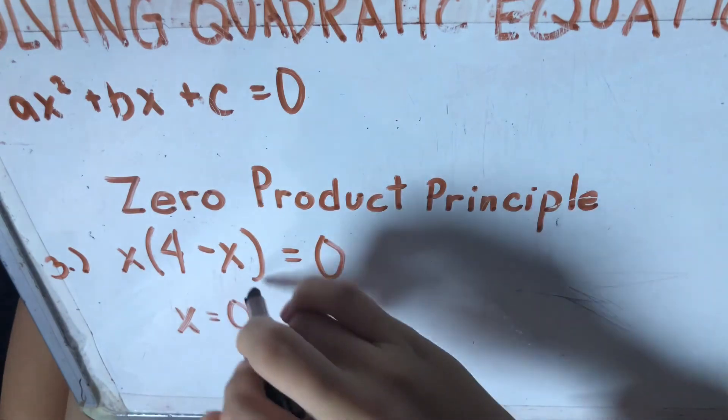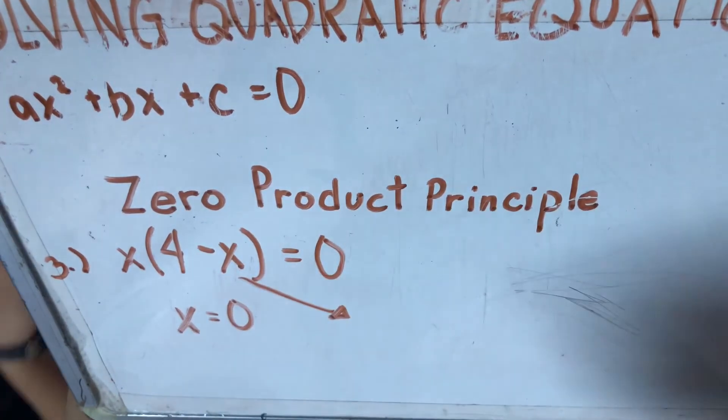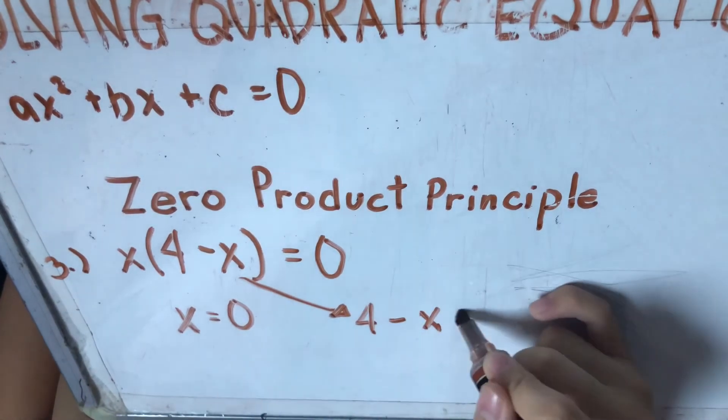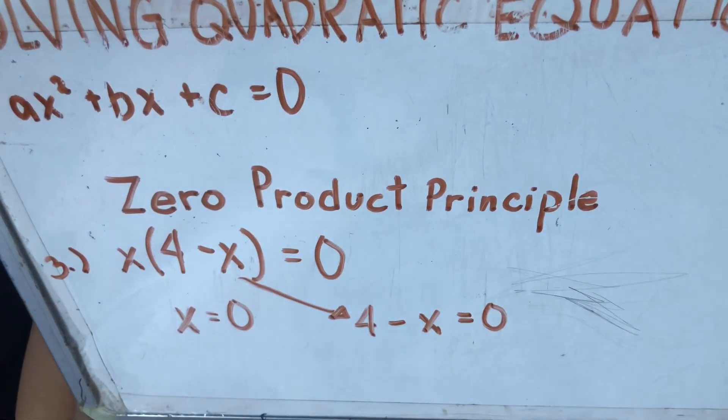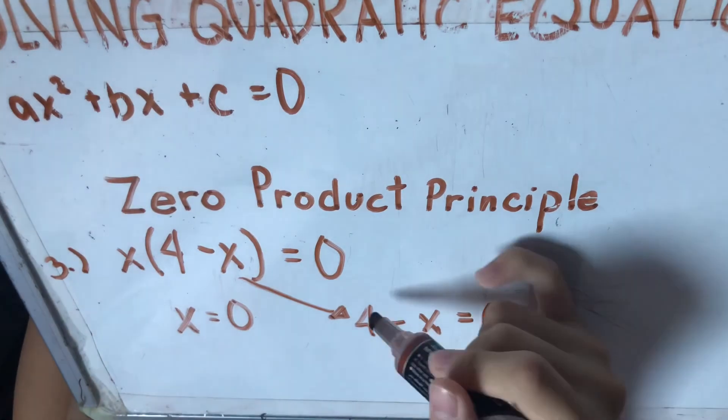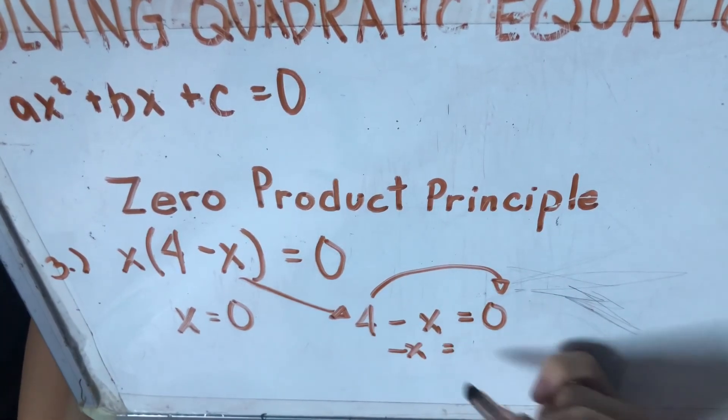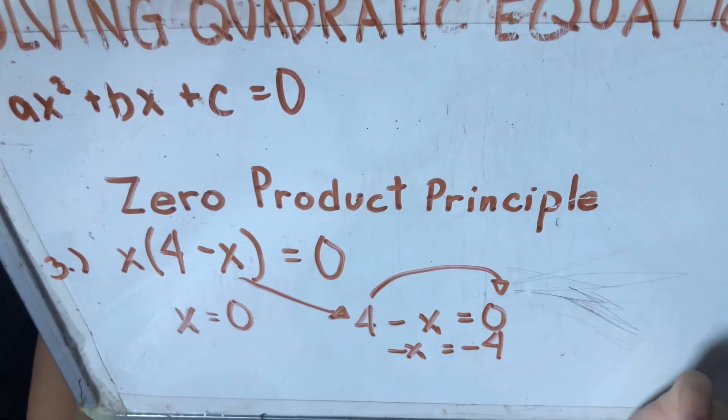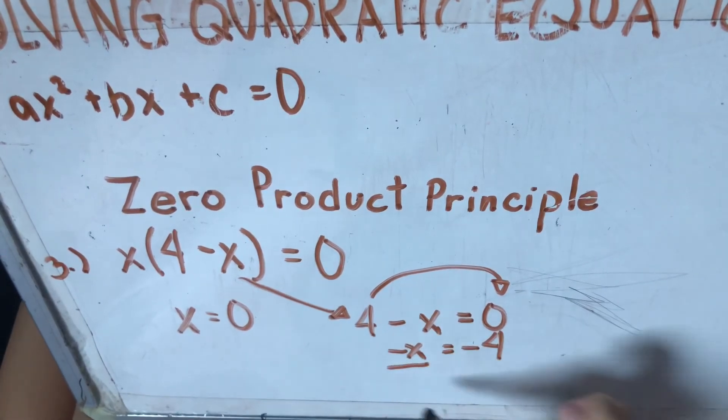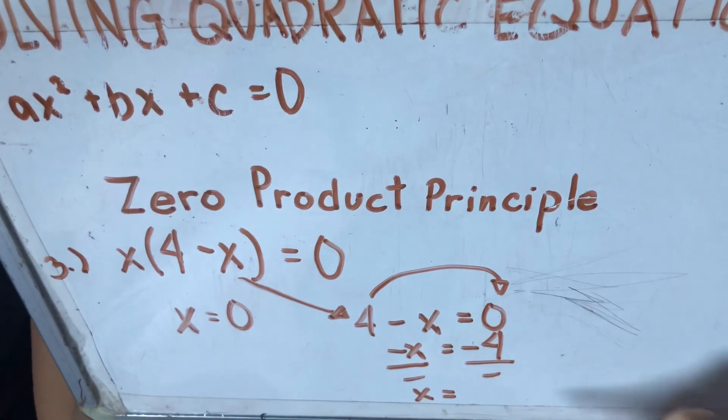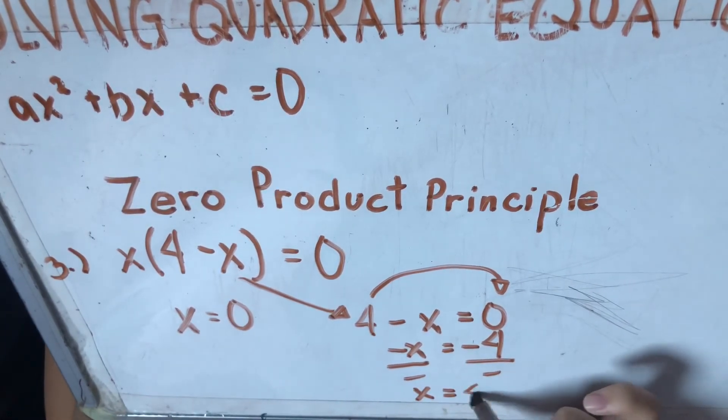Ngayon, to find out the other, kundin natin itong nasa parentheses. So, 4 - x = 0. So dito, lipat natin, -x = -4. So divide natin sila para sa negative. Ang sagot niyan is x = 4.